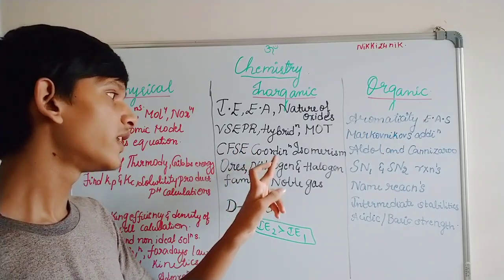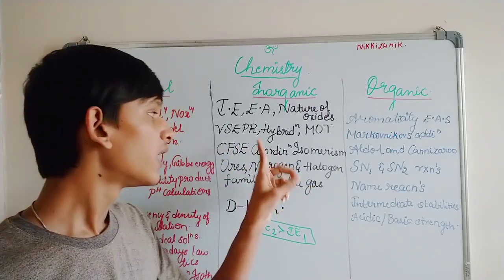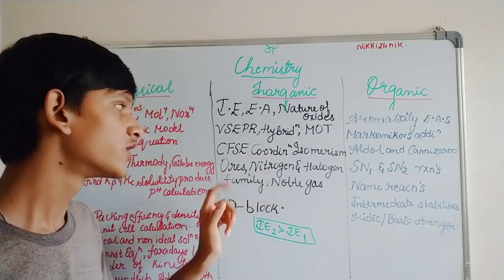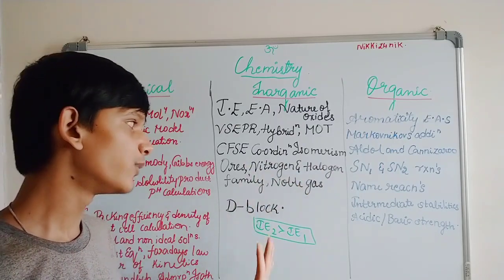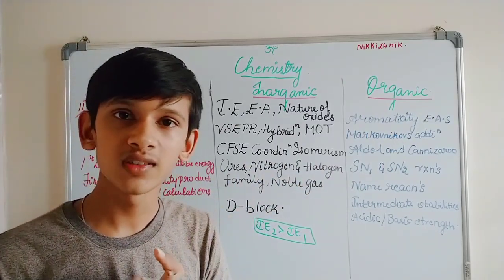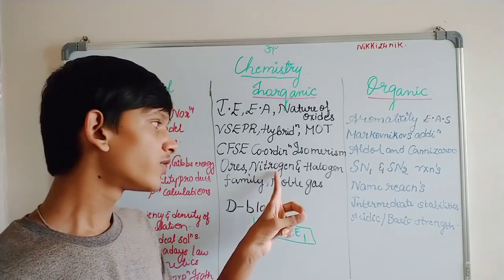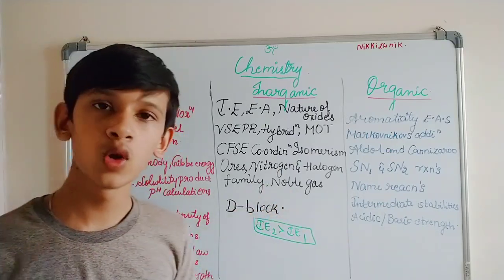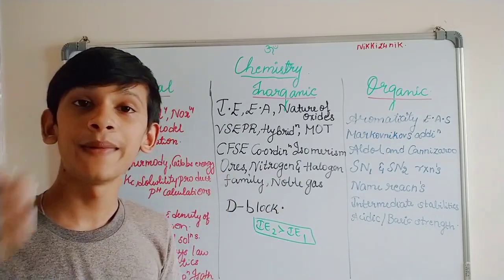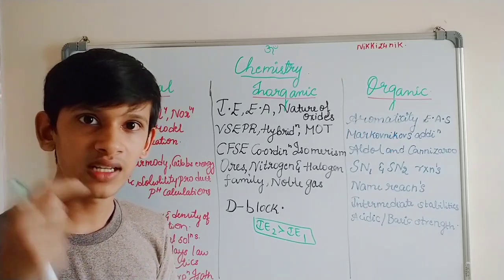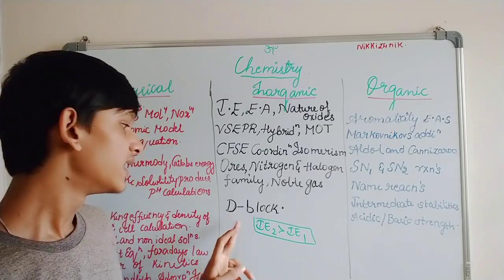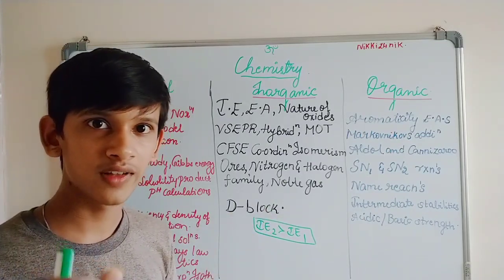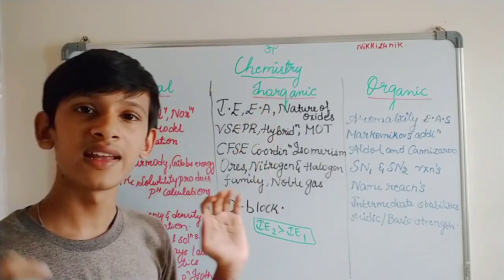Next is CFSE — Crystal Field Theory — and Coordination Isomerism. We also have geometrical isomerism and stereoisomerism. You should concentrate on P-block important chapters: nitrogen family, oxygen family, halogens (many questions from previous years), and noble gases (Group 18). In metallurgy, learn different ores and their names and colours from NCERT. For D-block and F-block, concentrate well — there are many elements and many exceptions.